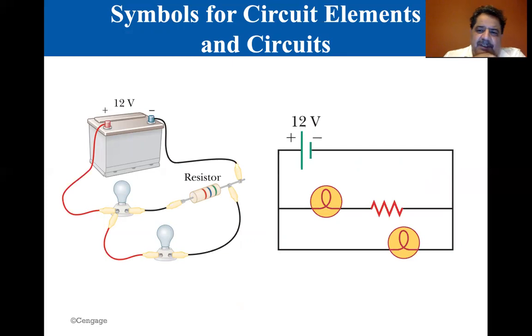This would be a typical arrangement. You come out of the positive, you go to a light bulb, then the branch with the other light bulb and the resistor—that's a parallel branch—comes back to the resistor and goes to the negative terminal of the battery. This is the way it's represented schematically.